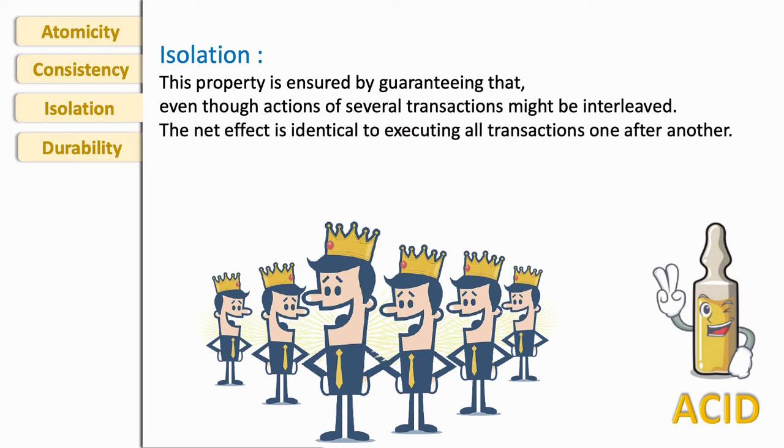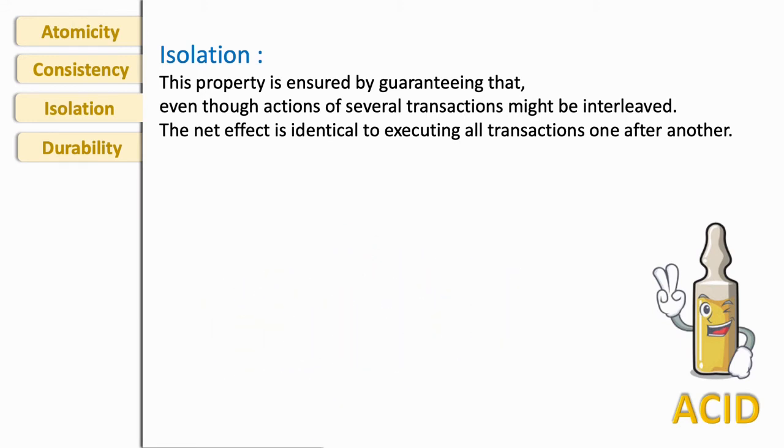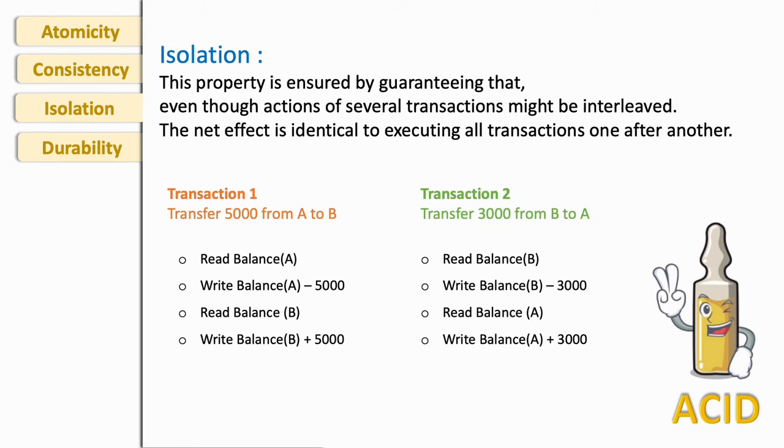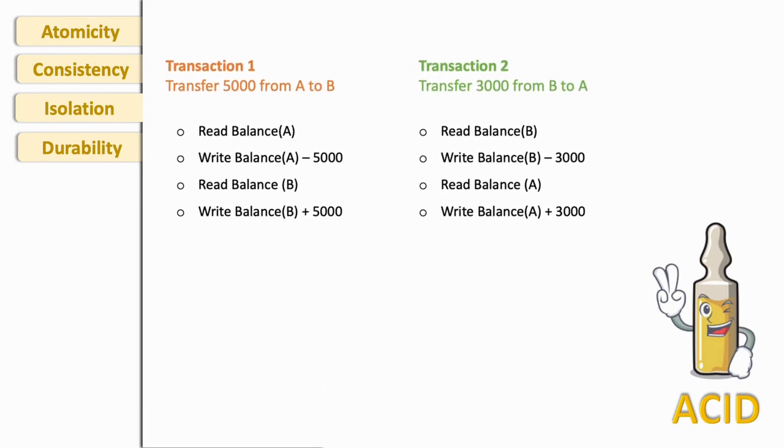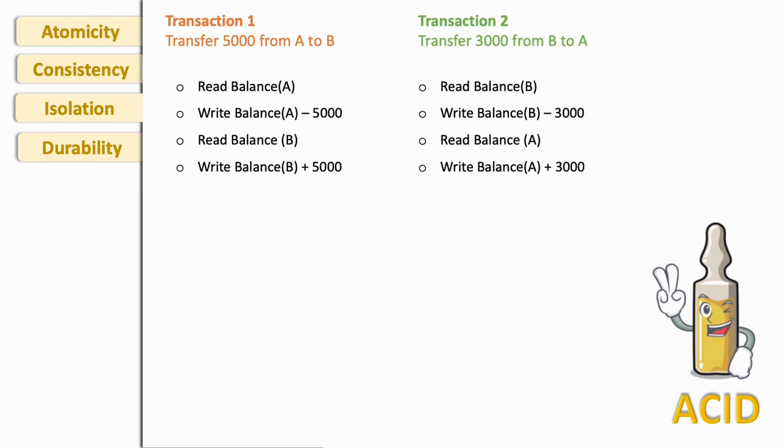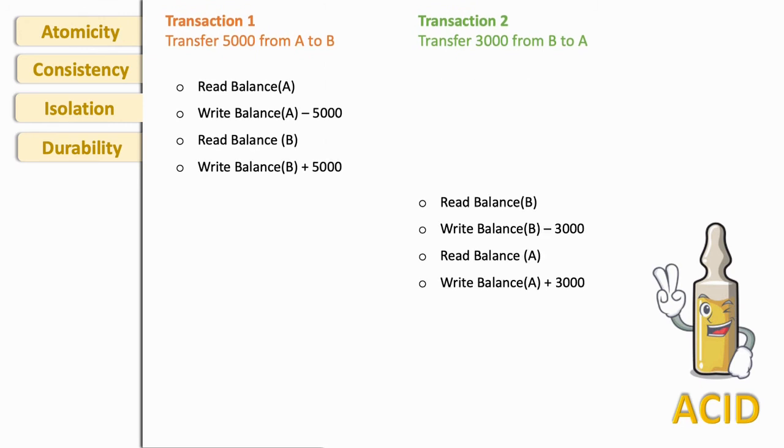This property is ensured by guaranteeing that even though actions of several transactions might be interleaved, the net effect is identical to executing all transactions one after another. For example, there are two transactions. In first transaction, I want to send five thousand rupees from account A to B, and in second transaction I want to transfer three thousand rupees from account B to A.